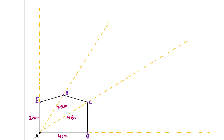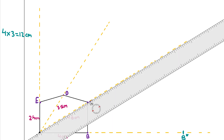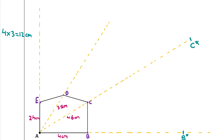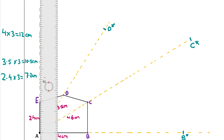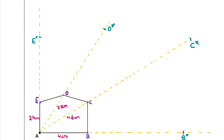Starting with A to B: 4 × 3 = 12 centimeters, so mark the new point B* at 12 cm from A. For C: 4.6 × 3 = 13.8 centimeters, giving new point C*. For D: 3.5 × 3 = 10.5 centimeters, giving new point D*. Finally for E: 2.4 × 3 = 7.2 centimeters, giving new point E*. Once all points are marked, connect them to draw the new enlarged shape.